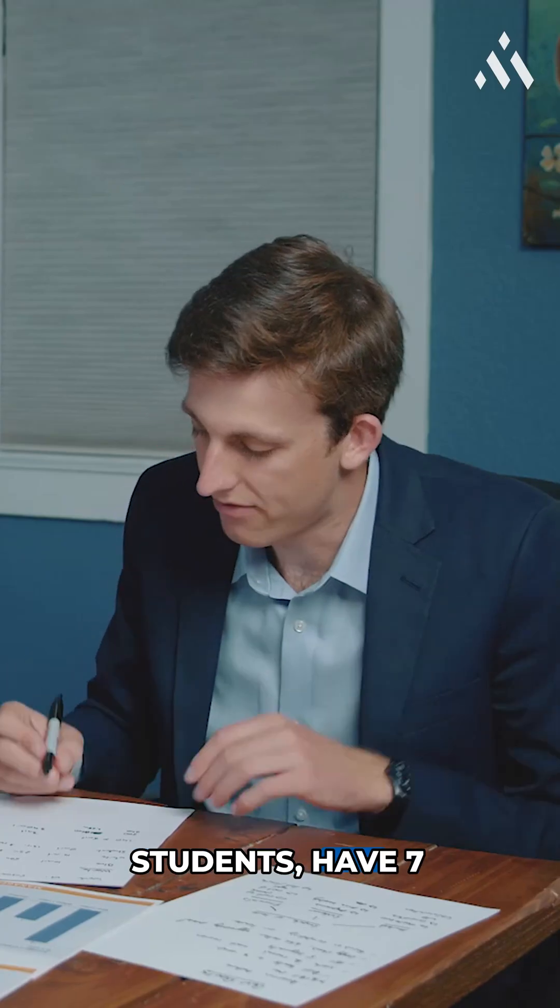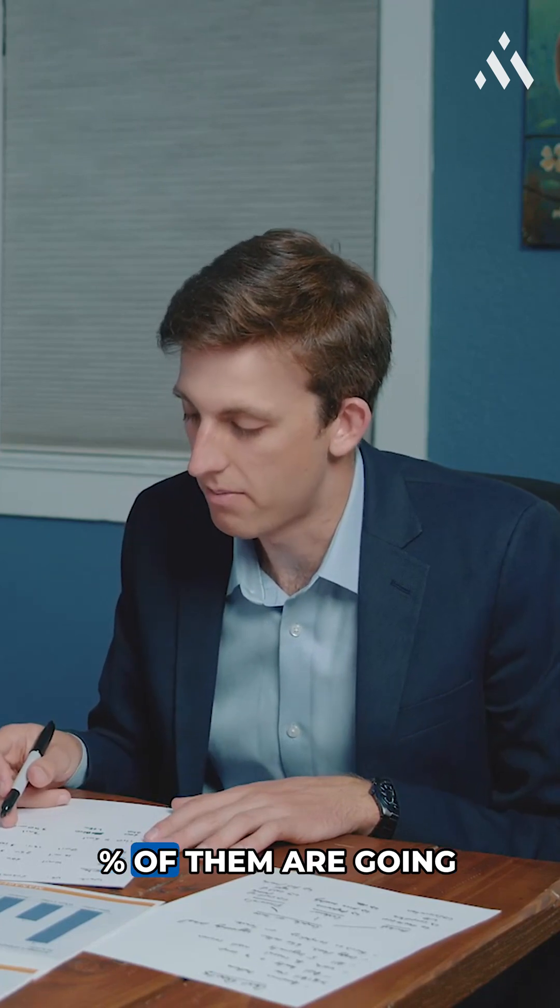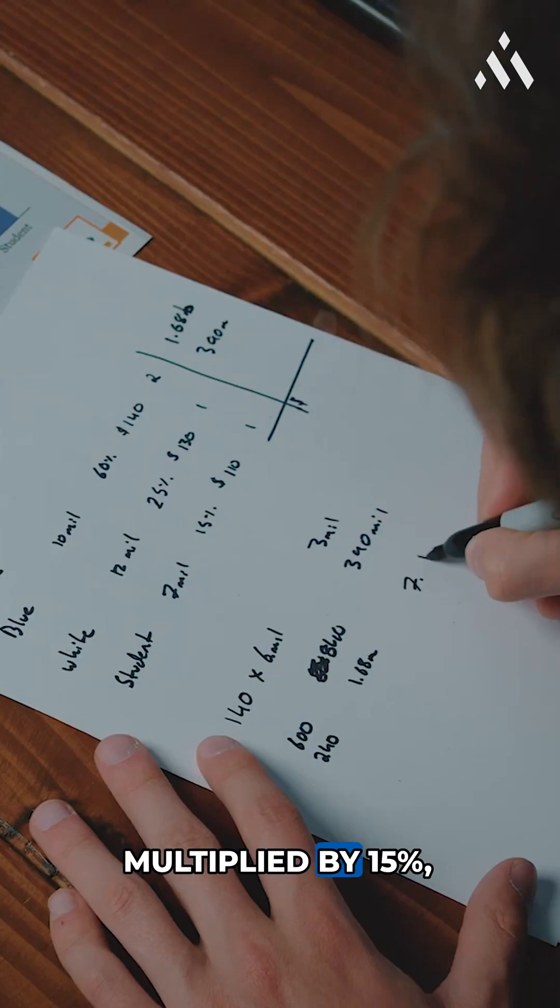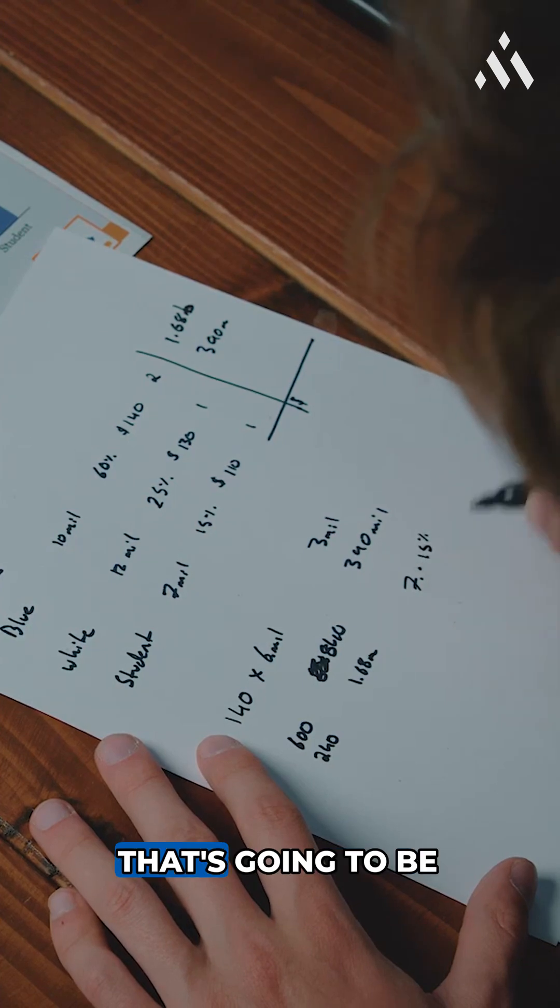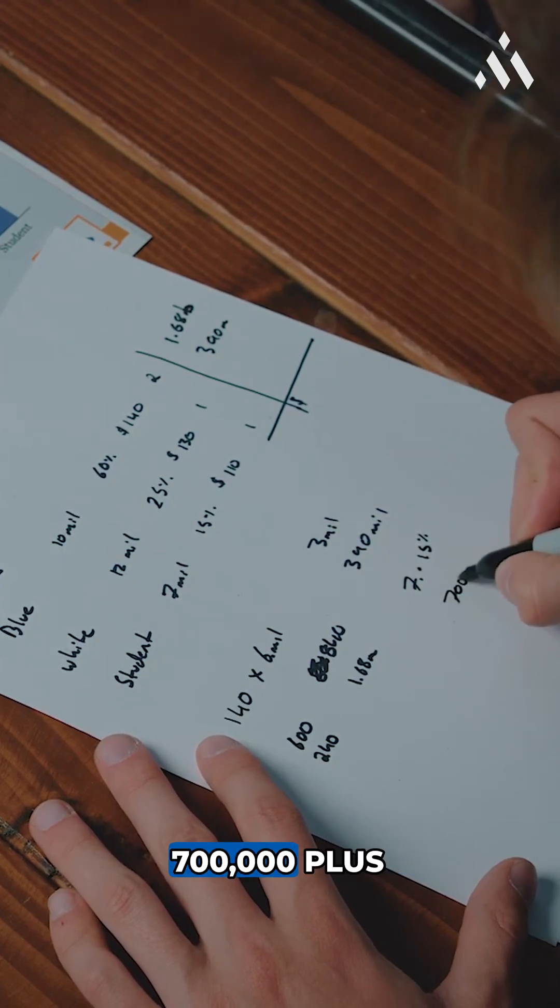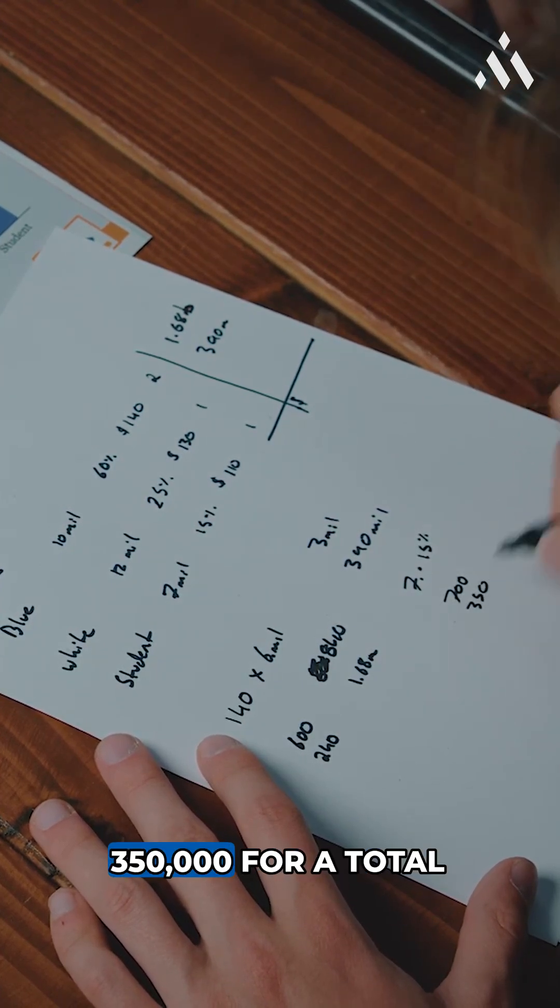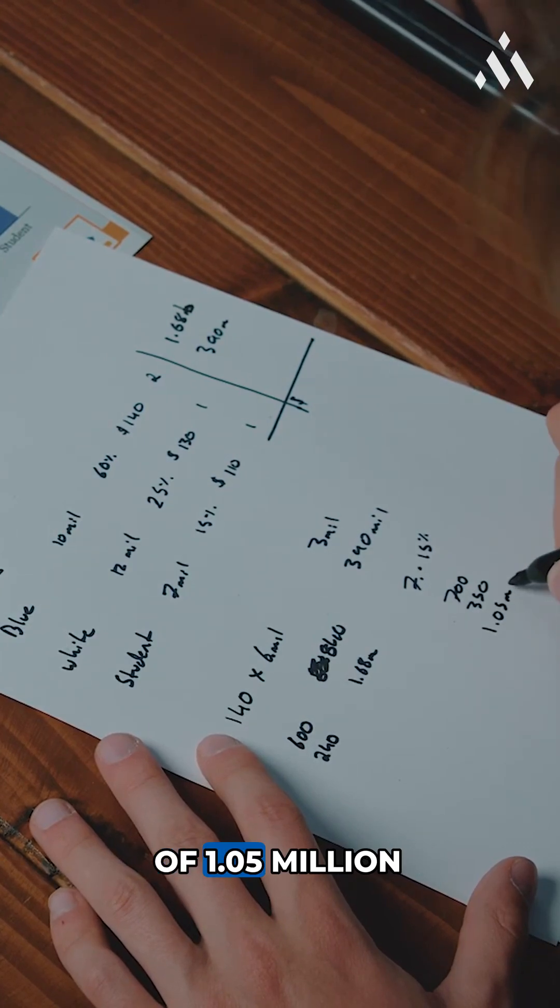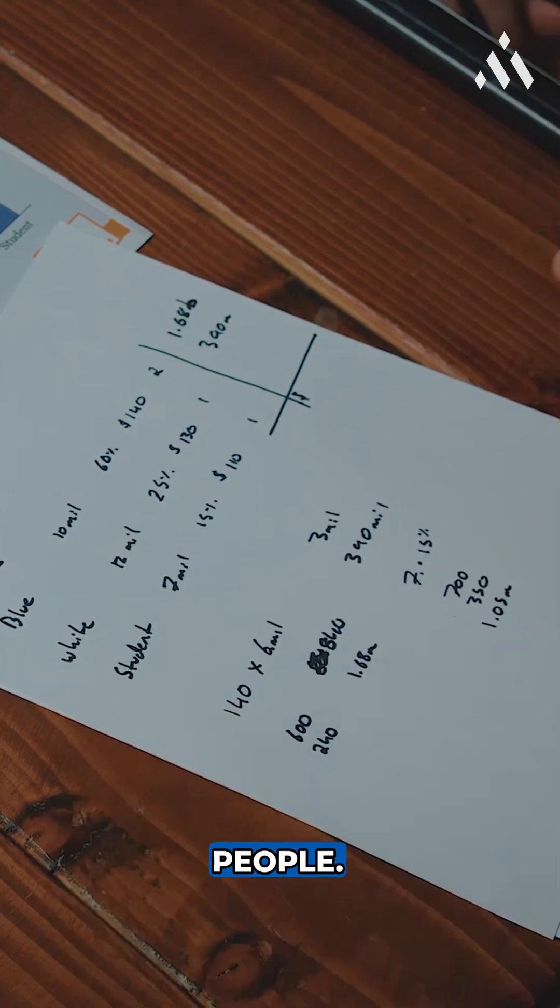When we look at students, we have $7 million. And only 15% of them are going to buy work boots. So $7 million multiplied by 15%. That's going to be $700,000 plus $350,000 for a total of 1.05 million people.